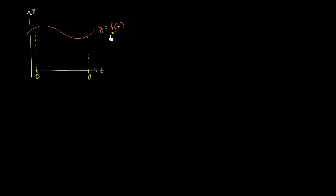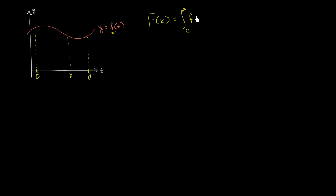Let's say we've got some function f that is continuous over the interval between c and d. I'm using c and d instead of a and b so I can use a and b for later. We set up some function capital F of x, which is defined as the area under the curve between c and some value x, where x is in this interval where f is continuous. So it's the area under the curve between c and x, which is the integral from c to x of f of t dt. That right over there is what capital F of x is.